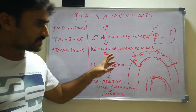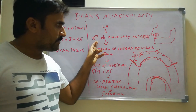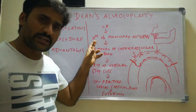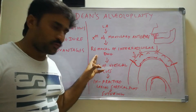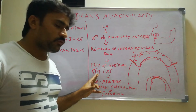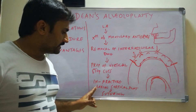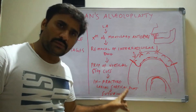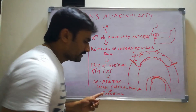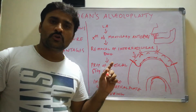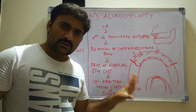This is the step-by-step procedure: first LA, then extraction of maxillary anteriors usually canine to canine, then removal of interradicular bone, then preparation of vertical stop cut at the canine sockets, then infracture of the labial cortical plate, and finally suturing.